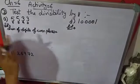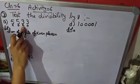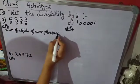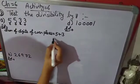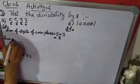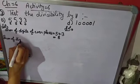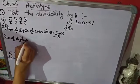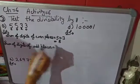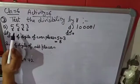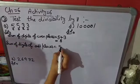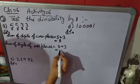The even-place digits are 5 and 3, so you write 5 plus 3, which equals 8. Similarly, write the sum of digits at odd places — those digits are also 5 and 3, so adding them gives 8 again.